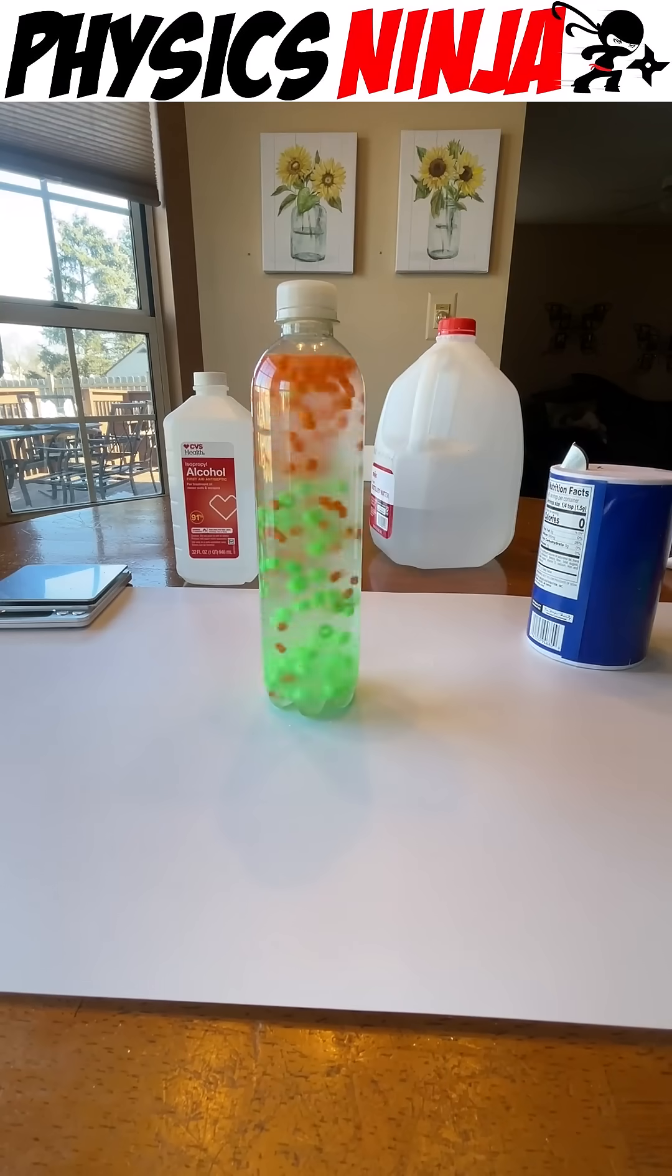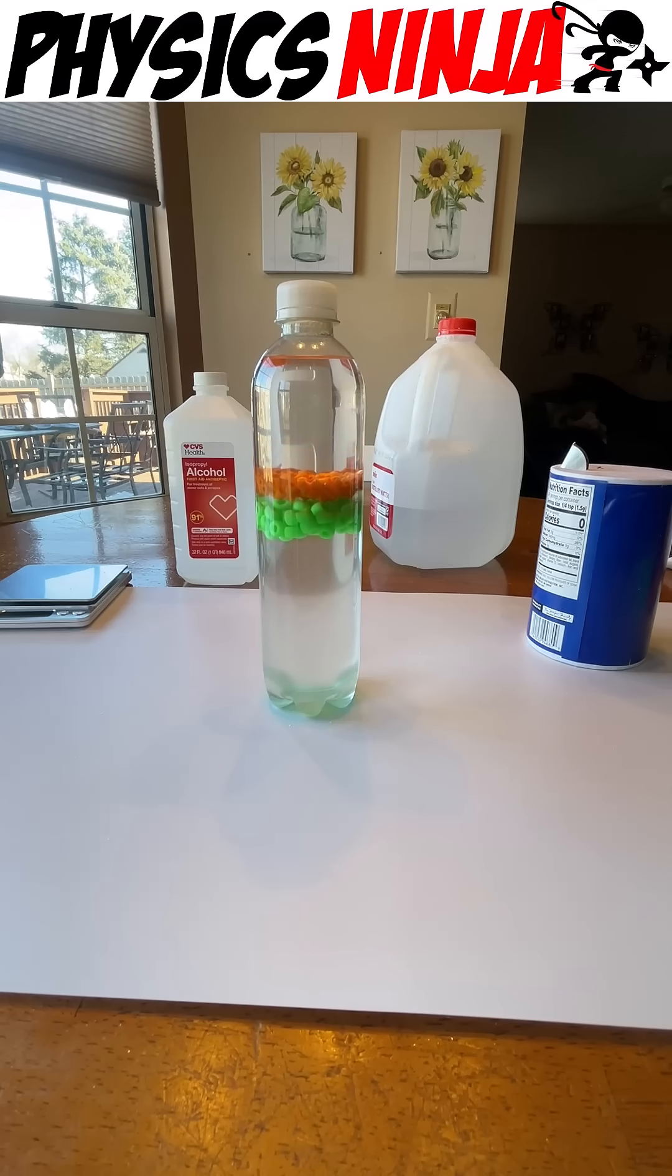The Perler beads float to the top, the pony beads sink to the bottom again. However, unlike before, you'll notice that the beads start to move. The Perler beads and the pony beads will start their journey and meet again at the center of the bottle. Pretty cool.